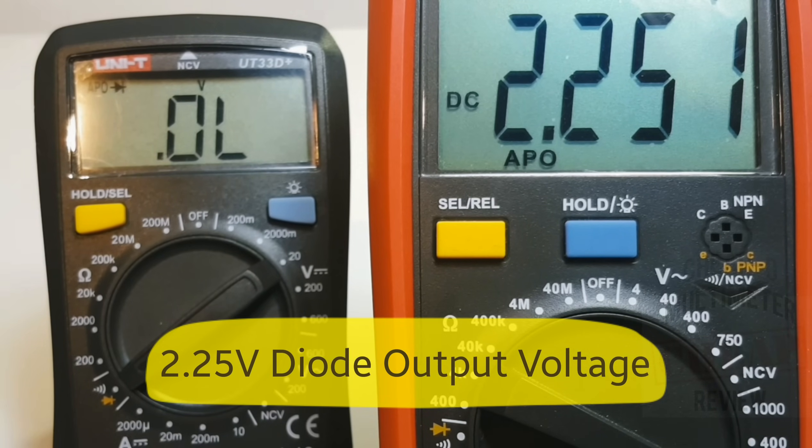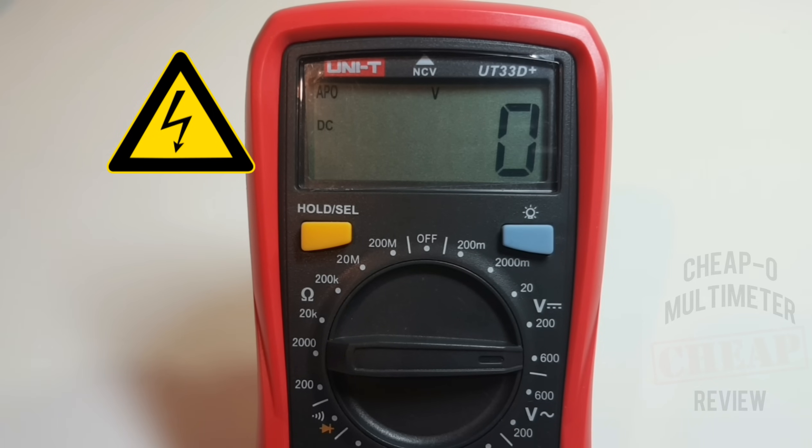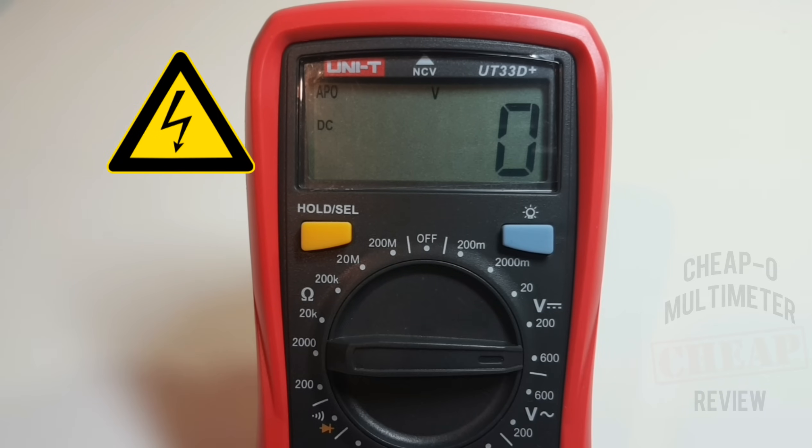There's the output voltage in diode mode for the 33D+: 2.25 volts. High voltage testing is next. Let's see if we can get up to at least 600 volts on the DC scale and hopefully UT33D+ is going to be able to take it without even breaking a sweat. Already put the safety goggles on. Here we go.